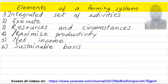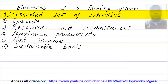The elements of a farming system. First on the list: integrated set of activities. They are the various sets of activities that are interconnected and are carried out on the farm. One activity has an effect on another. These activities are linked up.